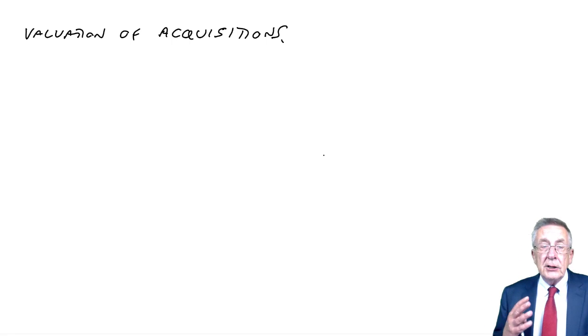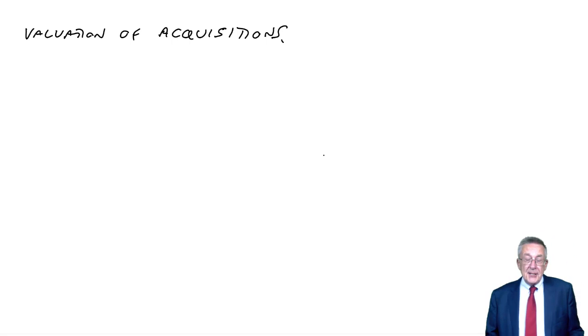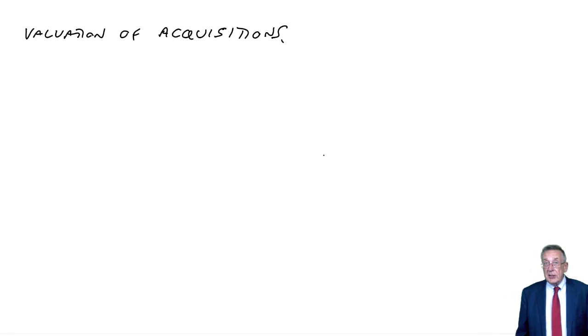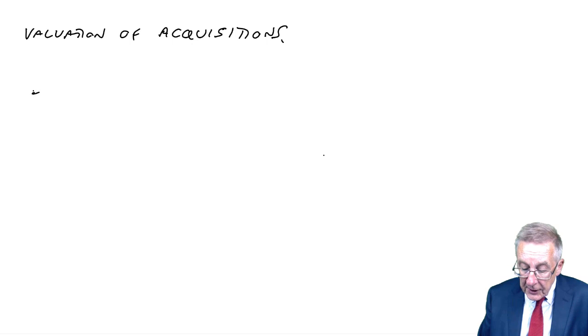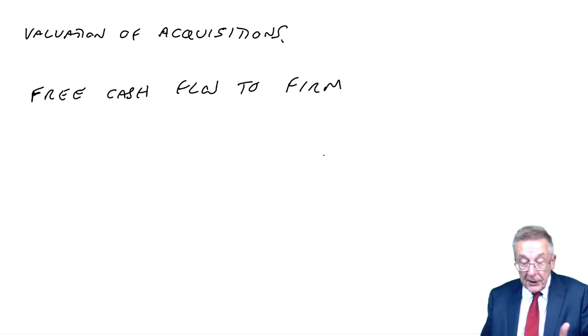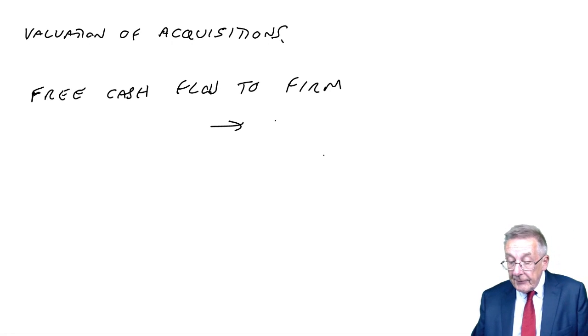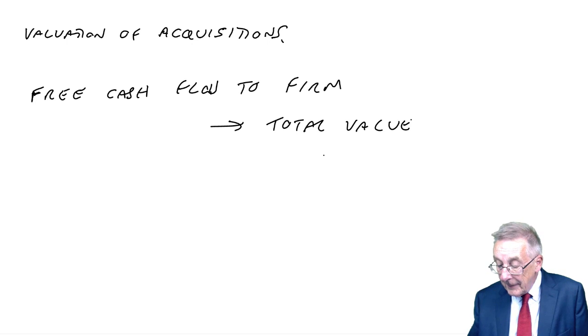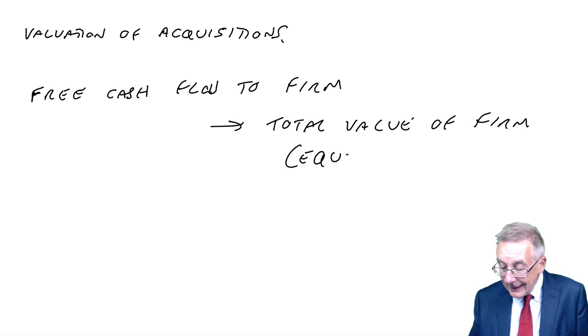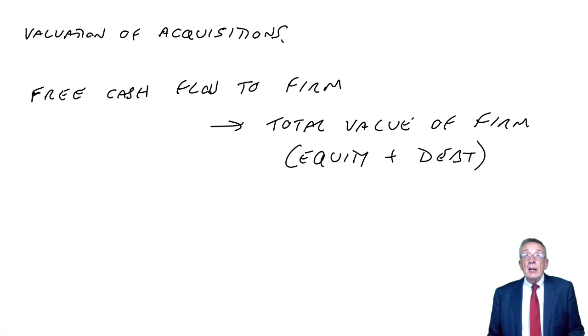In the previous lecture, I talked through the free cash flow to firm method of valuing companies. The free cash flow was calculated in exactly the same way as we do in project appraisal. The cash flow is available for all providers of finance, we discount it at the relevant cost of capital, and it gives us the total value of the firm, equity plus debt. If I wanted to know what the equity is, we'd then have to subtract the value of the debt.